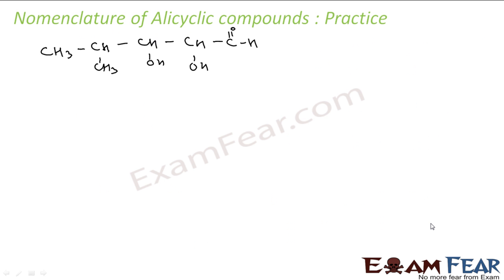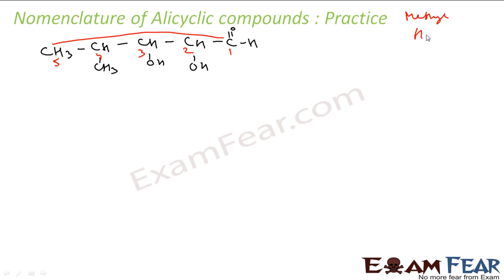So let's try to name this compound. There is an aldehyde group here and there are two alcohol groups here. The aldehyde group has higher priority than the alcohol group. So this is my longest chain. This aldehyde group has higher priority, so I give it number one, this is two, this is three, this is four, this is five. About the prefixes, I have methyl and two hydroxy groups. Since H comes before M in the alphabet, hydroxy comes first. So it's 2,3-dihydroxy.